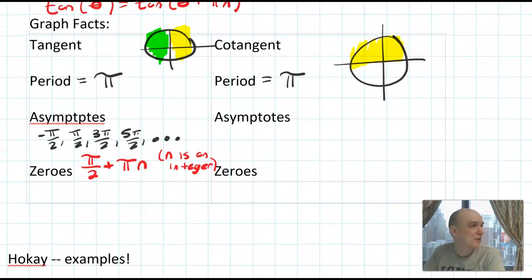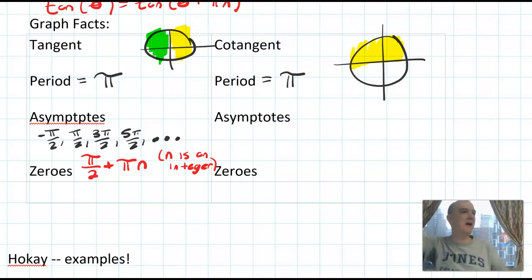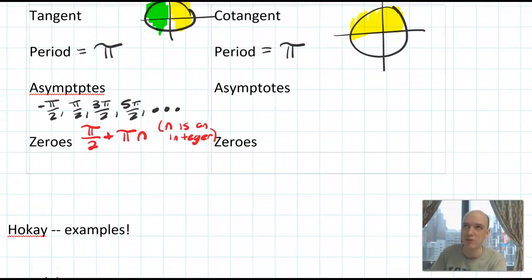And if I, on a test or quiz, ask you to describe or list all asymptotes, that is what I'm looking for. I'm not looking for all the asymptotes that you drew. I'm looking for all the asymptotes as an expression. So practice this as you work on your homework.